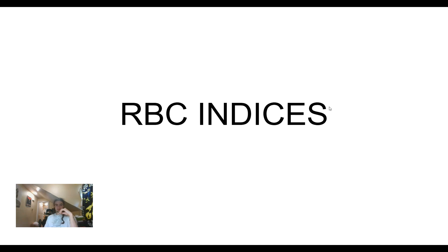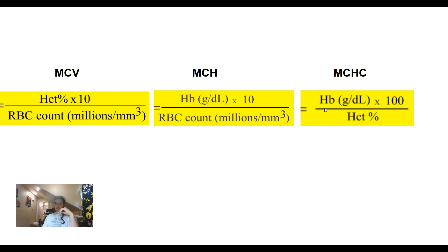Today we're going to be talking about the red blood cell indices and what I like to do to help myself remember them. So MCV, MCH, and MCHC are made up of three numbers: the hemoglobin, the hematocrit, and the red blood cell count. But if you're like me, you don't remember exactly which one goes where — which values go into which equation and whatnot.